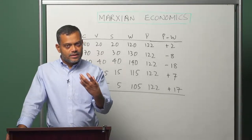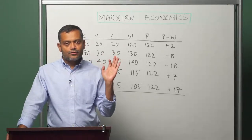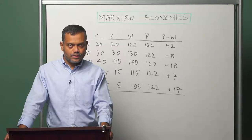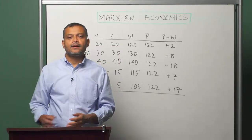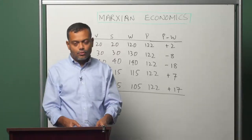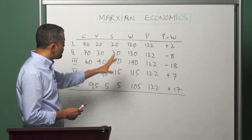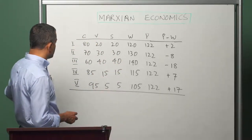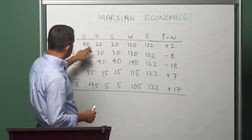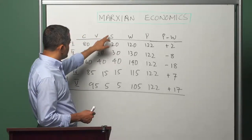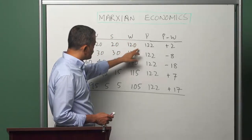To understand the details of how rent emerges, let us go back to the example we have used earlier — the example with five sectors. Let me remind you quickly: our economy has five sectors. Sector 1 has constant capital 80, variable capital 20, surplus value 20, and therefore the value of output is 120.